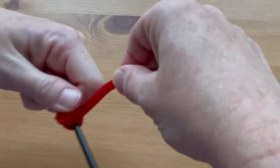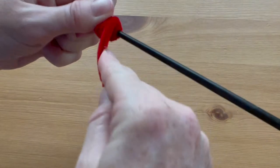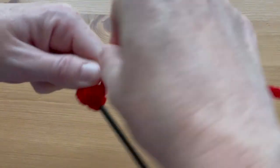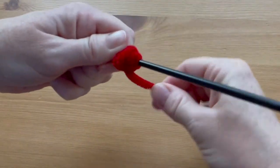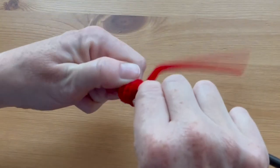Hold the second red pipe cleaner against the first one and coil it around, one coil on top of another, focusing on the middle to make a nice round shape.